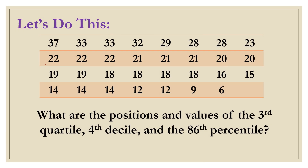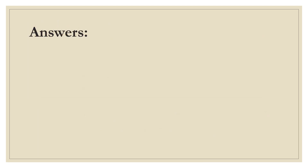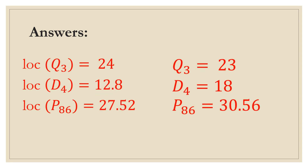Now, let's do these activities. You will be given time to answer. The answers are: the location for quartile 3 is 24; location for D4 is 12.8; the location for percentile 86 is 27.52. And the values are 23, 18, and 30.56 respectively.